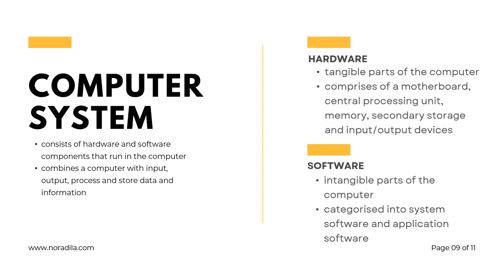Software, on the other hand, is the intangible part of the computer. Software can be categorised into two types: system software such as the operating system (OS), and application software such as Microsoft Word. Both hardware and software form a tool that can be used to perform a task or operation.